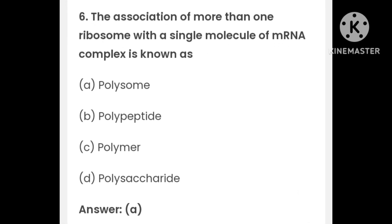The association of more than one ribosome with a single molecule of mRNA complex is known as: polysome, polypeptide, polymer, or polysaccharide. The answer is A — polysome.